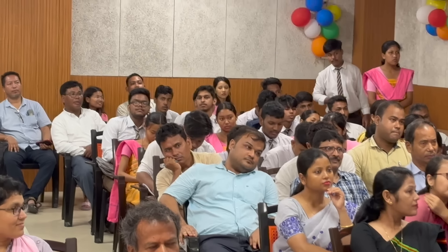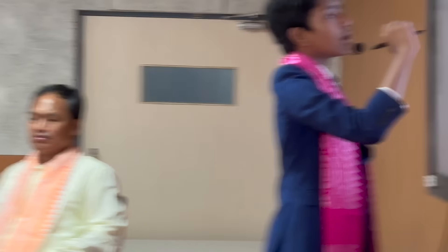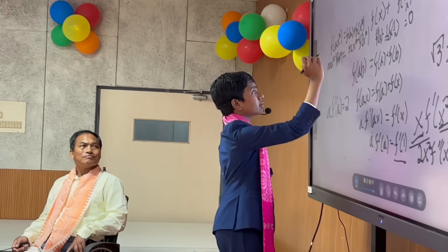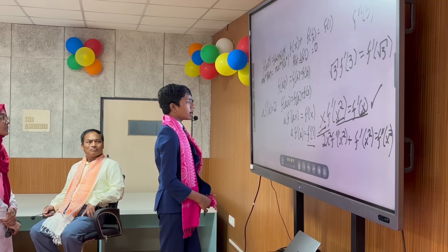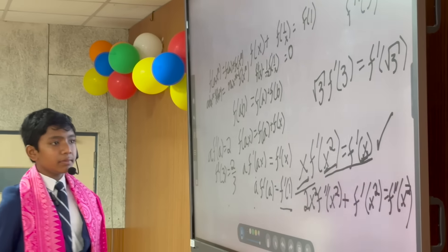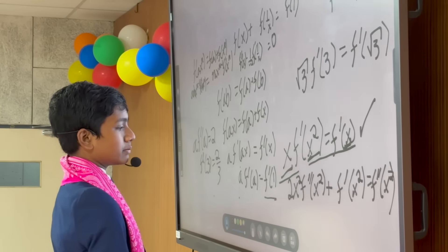Let's set b = xⁿ. So this is equal to f(a) + f(xⁿ). Taking the derivative: n·xⁿ⁻¹·f'(xⁿ) on one side, and a·n·xⁿ⁻¹·f'(axⁿ) on the other — these would cancel out. It looks like we can find this first derivative: f'(3) = 2/3.